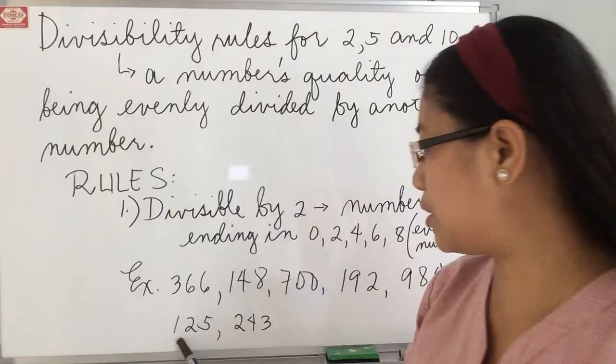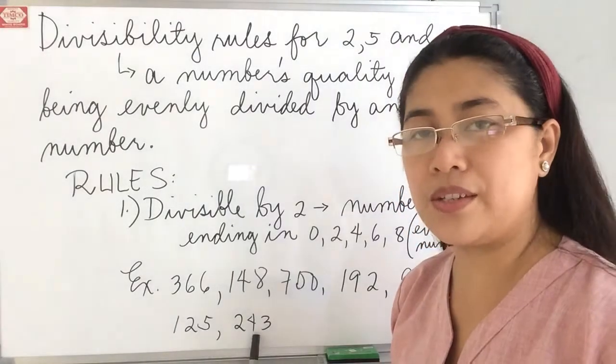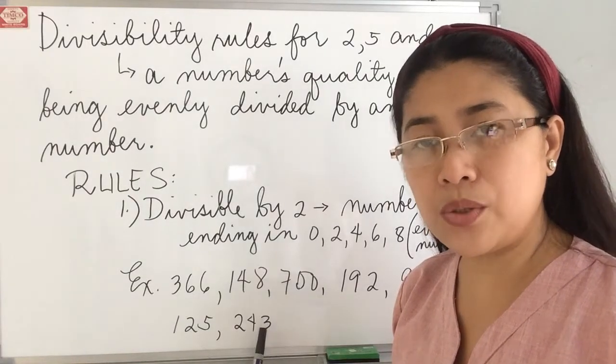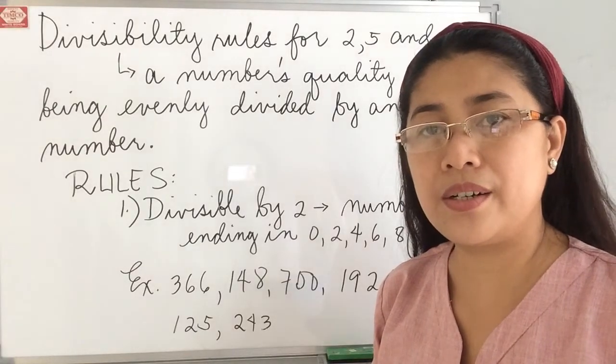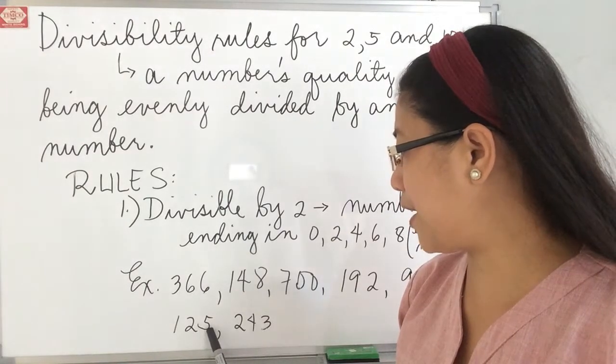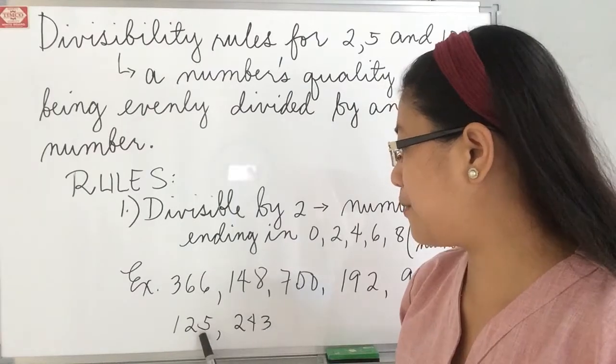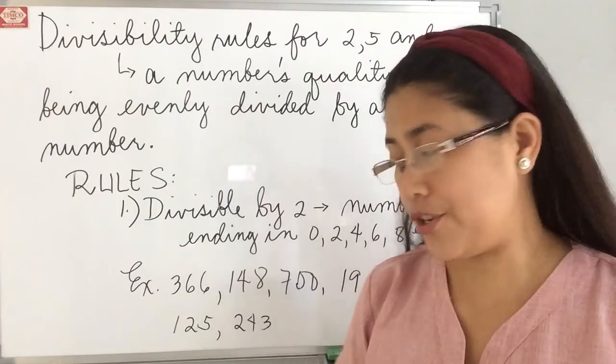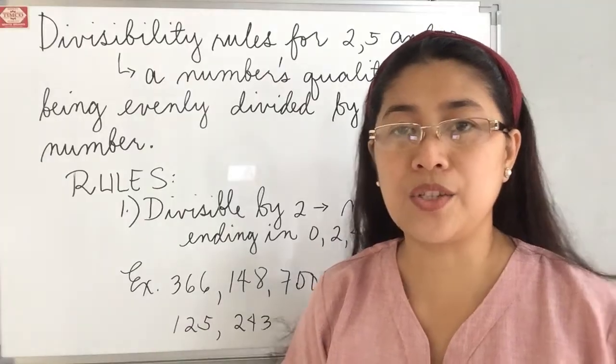How about the two numbers here? We have 125 and 243. Do you think we can divide it by 2 without giving us a quotient with remainder? No, because it ends with 5 and 3. So 5 and 3 are not even numbers. Therefore, these two numbers are not divisible by 2.